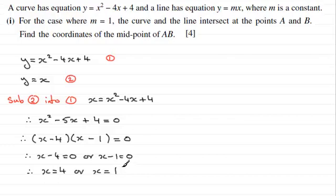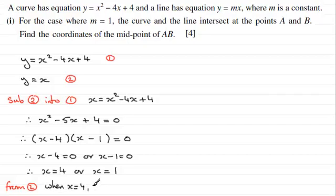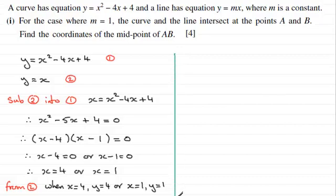We know that y must equal x from equation 2. So when x equals 4, y equals 4, and when x equals 1, y equals 1. This means our points A and B, where the line crosses the curve, are at (4, 4) and (1, 1).